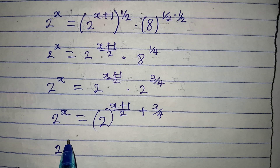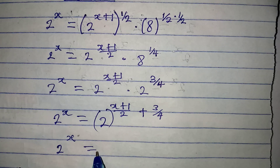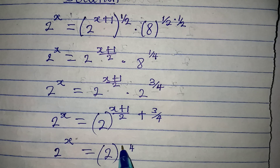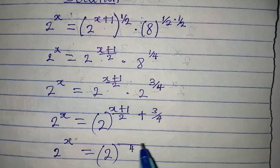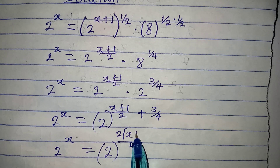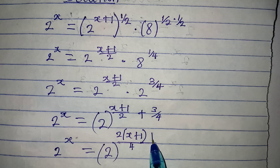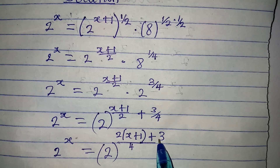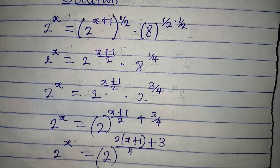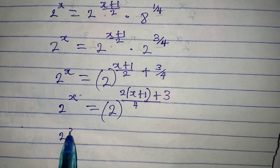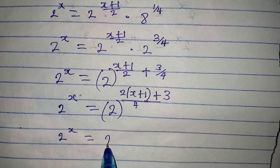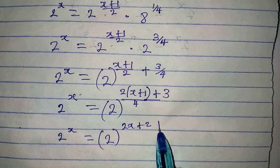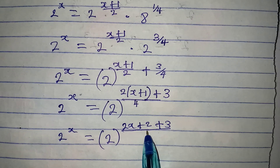From here we have 2 to the power of x equal to 2 to the power of — the LCM of 2 and 4 is 4. So 4 divided by 2 is 2, giving us 2 times (x+1), then 4 divided by 4 is 1, times 3 is 3. Opening the bracket: 2 to the power of x equals 2 to the power of (2x + 2 + 3), all over 4.